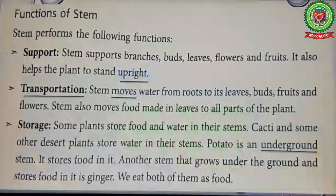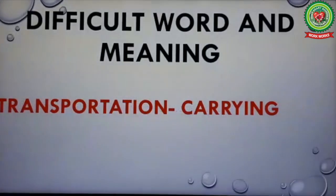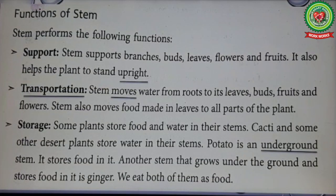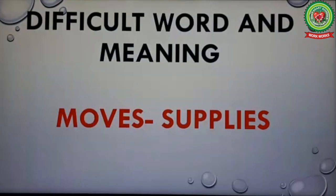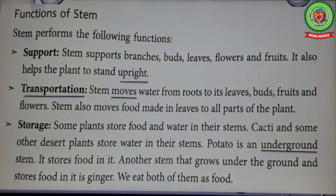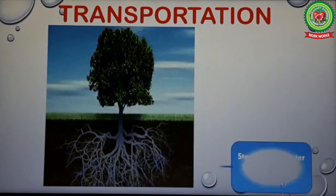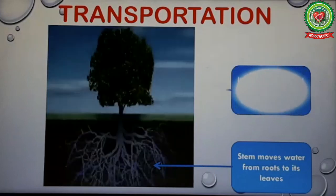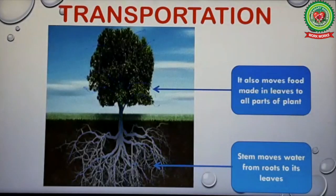Second point: transportation. Underline 'transportation' and write its meaning: carrying. Stem moves water from roots to its leaves, buds, fruits, and flowers. Underline 'moves' and write its meaning: supplies. Stem also moves food made in leaves to all parts of the plant. Stem supplies water and nutrients absorbed by roots to all parts of the plant, and it supplies food prepared by leaves to all parts of the plant.